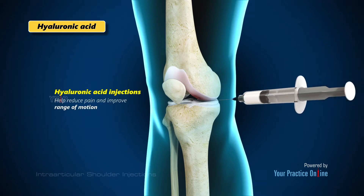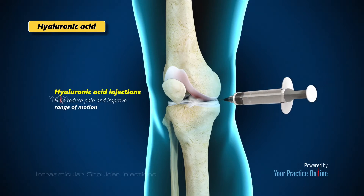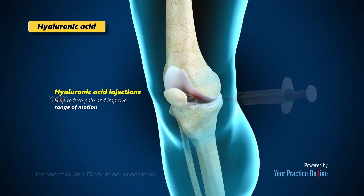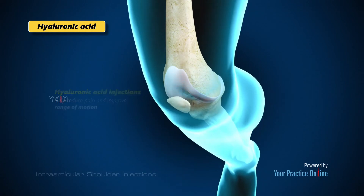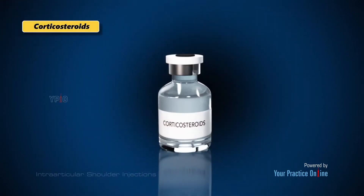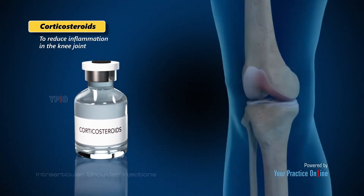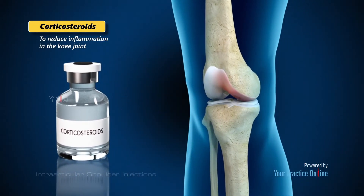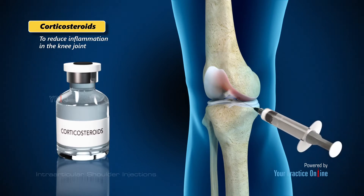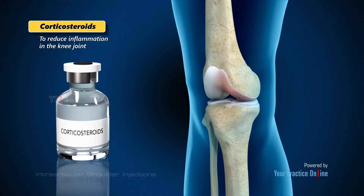Hyaluronic acid injections into the knee can help reduce pain and improve range of motion. Your doctor may also perform an intra-articular injection of corticosteroids to reduce inflammation in the knee joint. Corticosteroids prevent the production of inflammatory cells that are naturally produced in response to an acute injury or arthritic conditions.